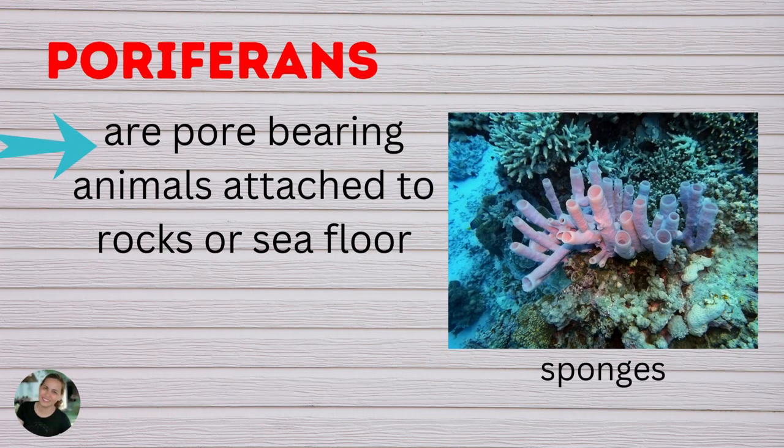The next group of invertebrates are porifera. These are filter-feeding animals attached to rocks or the seafloor, just like sponges.